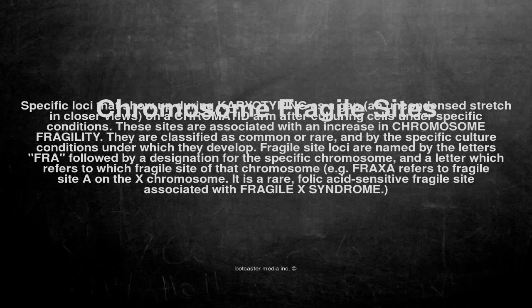Chromosome Fragile Sites are specific loci that show up during karyotyping as a gap, an uncondensed stretch in closer views, on a chromatid arm after culturing cells under specific conditions. These sites are associated with an increase in chromosome fragility.